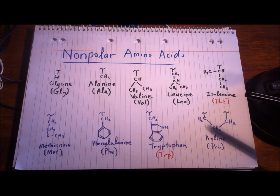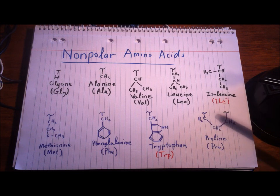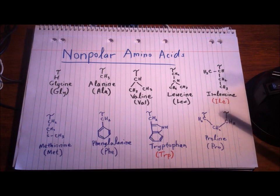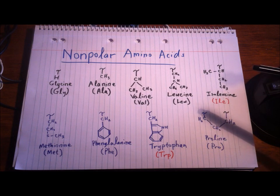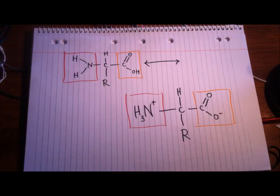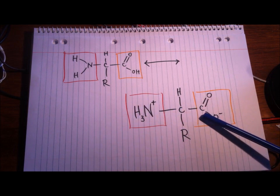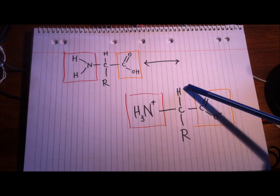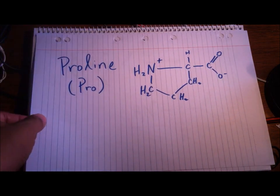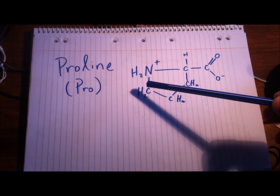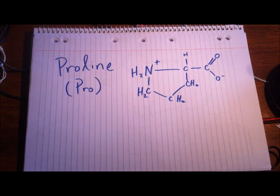The last one is proline, and this one's interesting because it can mess up the tertiary structure of a protein. What happens is it's connected to both the amino group and the carboxylic group — it's connected twice. It has three carbons stuck to the NH2 arm. So if you remember how amino acids look — amino side, carboxylic acid side, and R group — for proline, those three carbons link back into the amino acid side, and that creates a kink in your peptide chain.